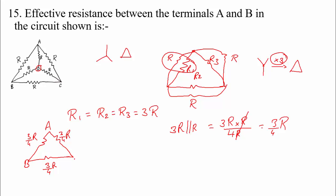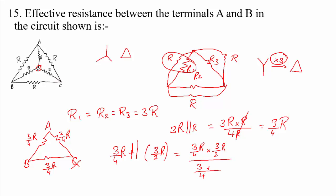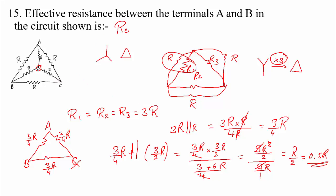These points are A, B, and C. Since they are asking for the equivalent resistance between A and B, the C terminal can be neglected. So 3/4 R is in parallel with the series combination of the other two 3/4 R branches, which gives 3/2 R in series. The equivalent value is (3/4 R × 3/2 R) / (3/4 R + 3/2 R) = R/2. So the equivalent resistance RAB equals 0.5 times R.